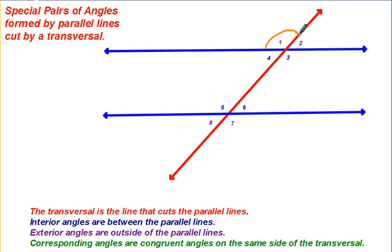These are called corresponding angles. They're on the same side of the transversal and they're congruent. That means they're both the same size, the same measure. So do you see this large obtuse one looks just like this large obtuse one? Angle 2 is the corresponding angle with angle 6. Angle 3's corresponding angle is angle 7. Angle 4's corresponding angle is angle 8.